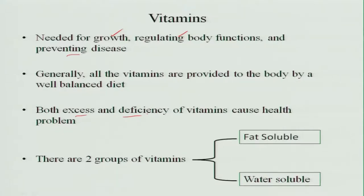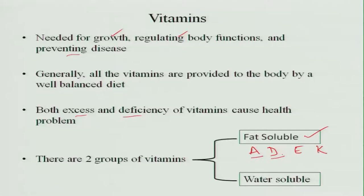We have two groups of vitamins. One is the fat-soluble vitamins, which include vitamins A, D, E and K. These fat-soluble vitamins are stored in the body, and whenever there is some deficiency, these stored nutrients are utilized. Vitamin A is mainly required for the health of epithelial tissues and for eyesight — whenever we talk of night blindness or any eye problem, we talk about vitamin A. Vitamin D is associated with bone growth and is very essential for calcium absorption. If vitamin D is not supplied, calcium absorption is hampered and the bones become weak.